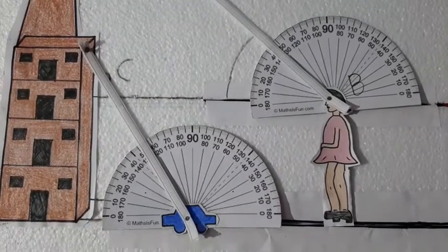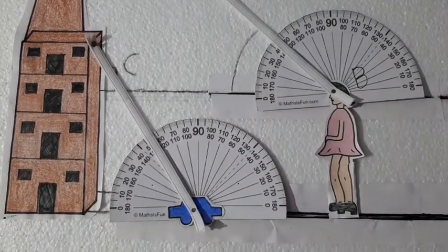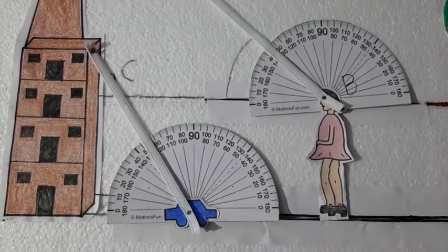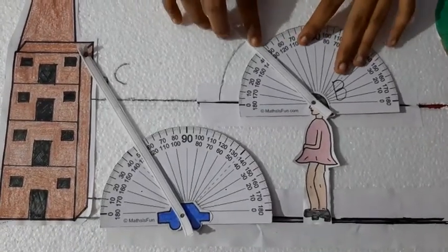For better understanding, I'll explain a very simple example by taking some of the numericals. Now, this is 45 degree.